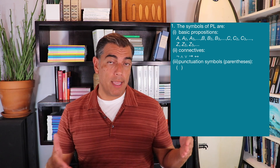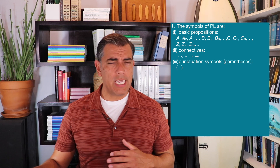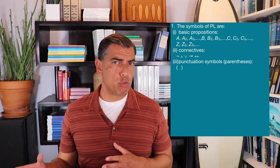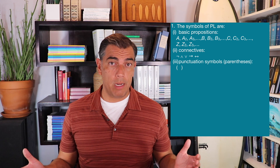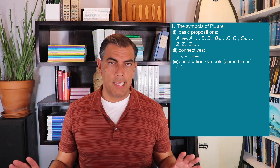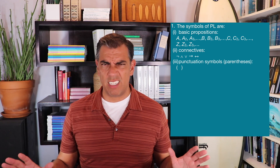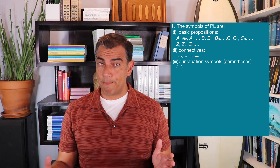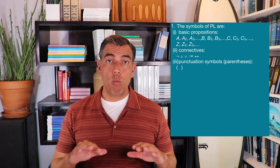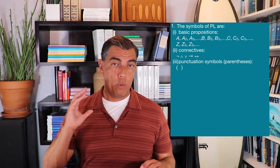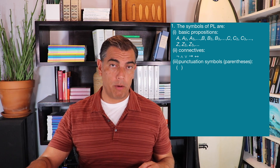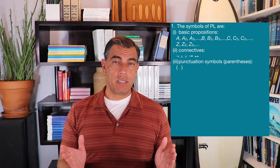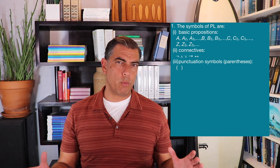We have our basic propositions: A, B, C, all the way through Z. We also said there's A sub 1, A sub 2 — you can subscript these, and then you can have an infinite number of them. But to keep things simple, let's just worry about A through Z. We also have our connectives, and we want to use these connectives with previously existing well-formed formulas to form new ones. We also have our parentheses, the only punctuation we'll use.